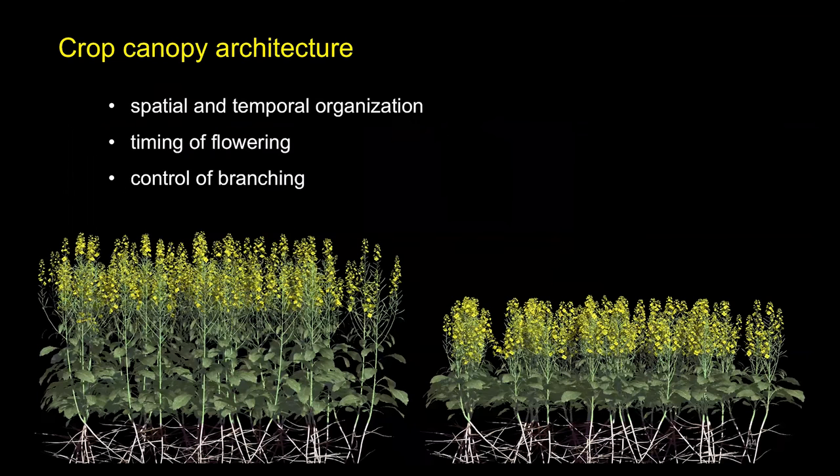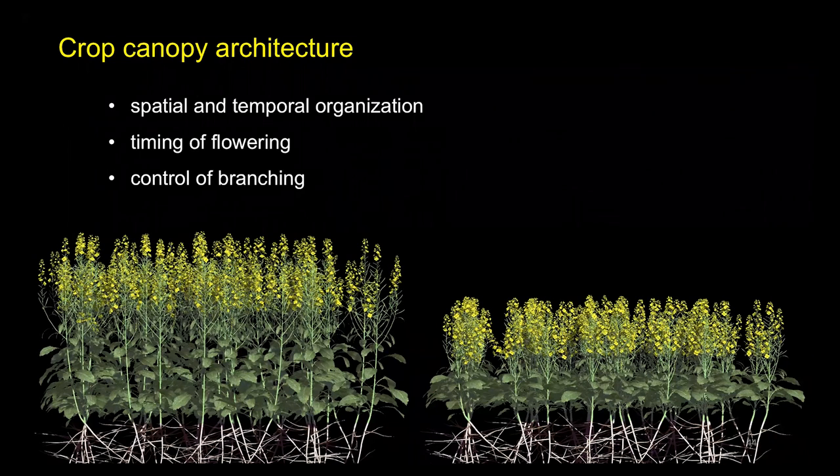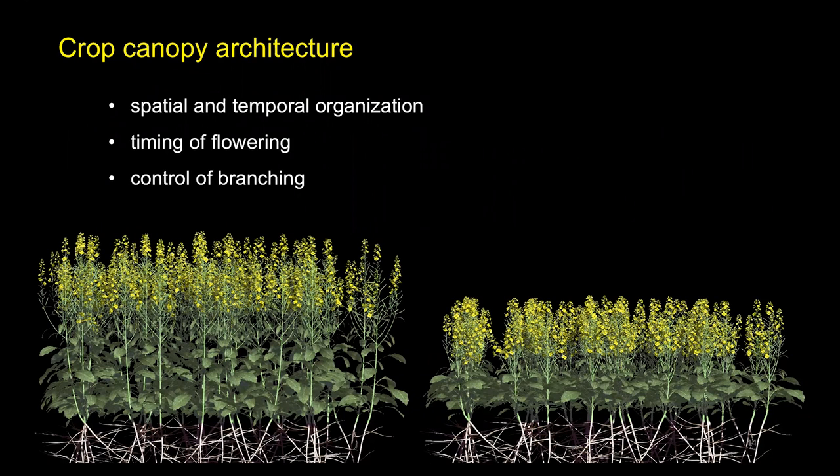Other interactions between plants can also be considered, including the light environment, for example, the red to far-red ratio, and genetic and hormonal control of branching, for which we have developed models in the past in different contexts. Then, different synthetic phenotypes can be used to help study the architecture of the canopy by examining the spatial and temporal arrangement of the organs, the time of flowering, and the control of branching, and their effects on plant growth.